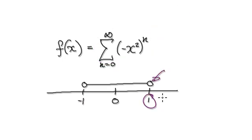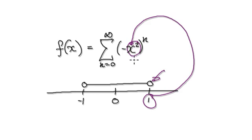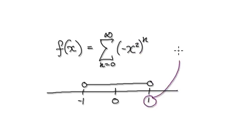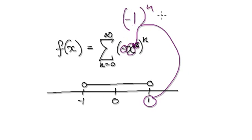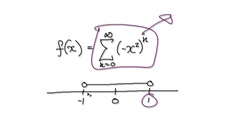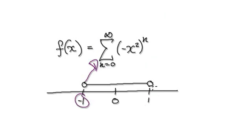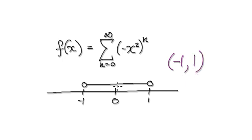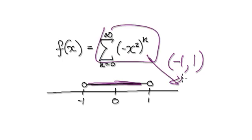When x equals 1, put it into here: 1 squared is 1, and then you've got a negative, so that gives you negative 1 to the power of n. Again, it's going to oscillate back and forth, so it's never going to converge. So at x equals 1 the series diverges as well. So our interval of convergence is strictly greater than negative 1 and strictly less than 1 — anything in between, this series is going to converge.